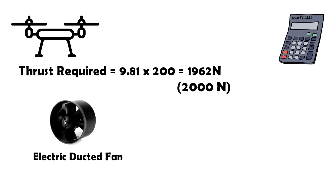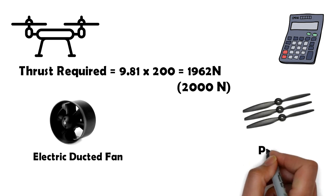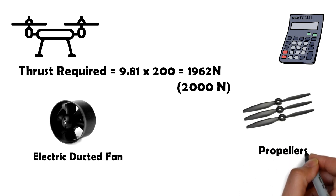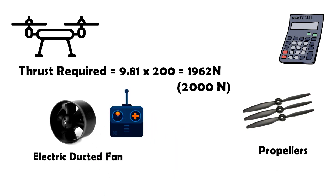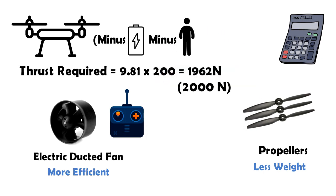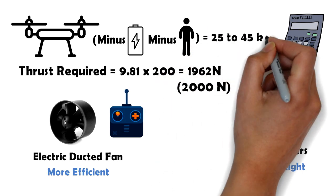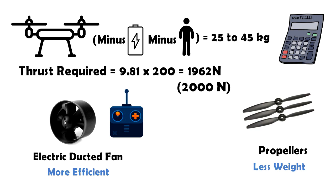This thrust force can be furnished by either electric ducted fans or open propellers. Electric ducted fans are known to the radio control model community. These ducted fans are more efficient compared to open propellers, nonetheless they come with a weight penalty because of the added material forming the duct. With an 80 to 100 kilogram battery pack and a single 75 kilogram passenger, it leaves weight for the frame, seating, motor and the propeller blade of about 25 to 45 kilograms.